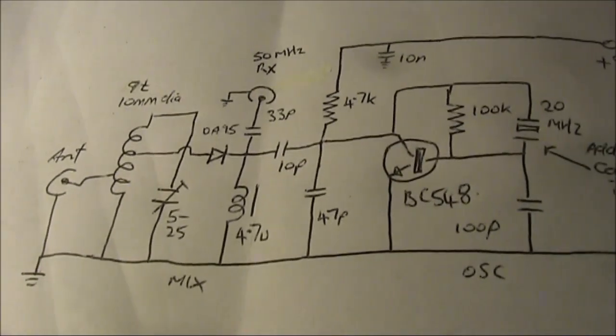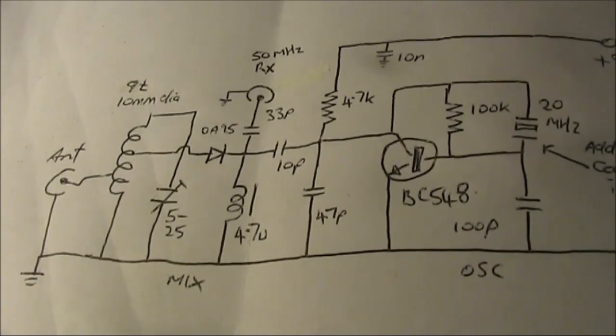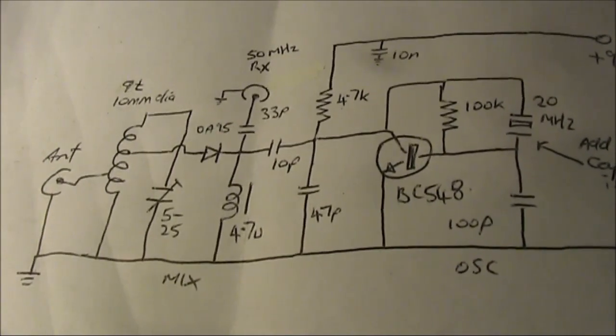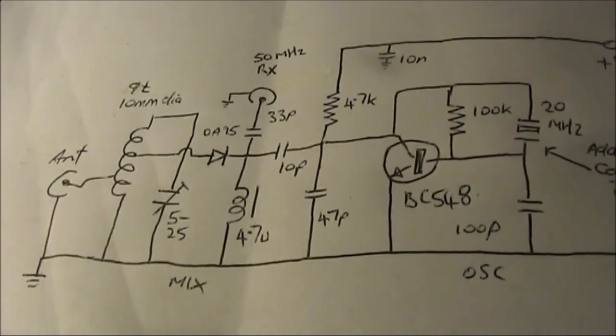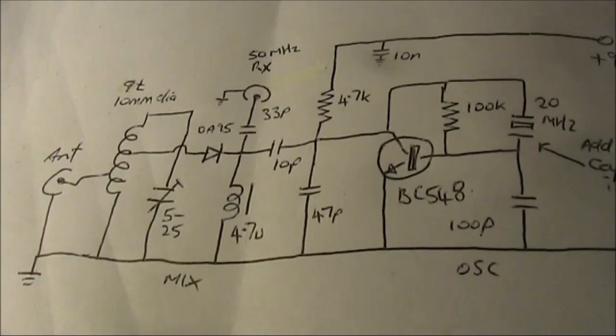So this is it. No demonstrations, as 70MHz is not an amateur band, and there's few other local signals in Australia. But if you want to get an idea of what this converter can do...